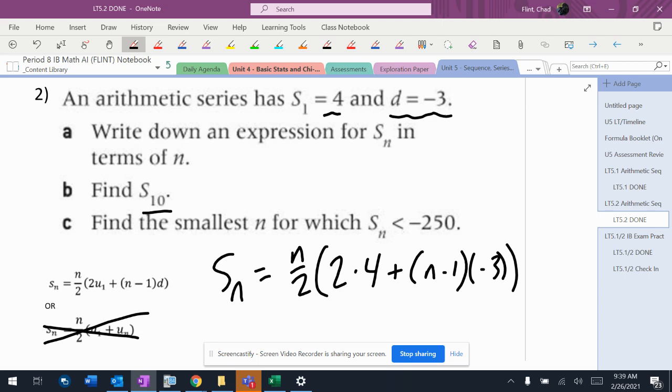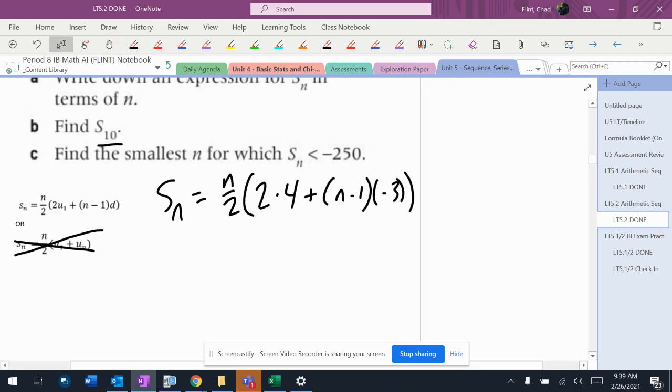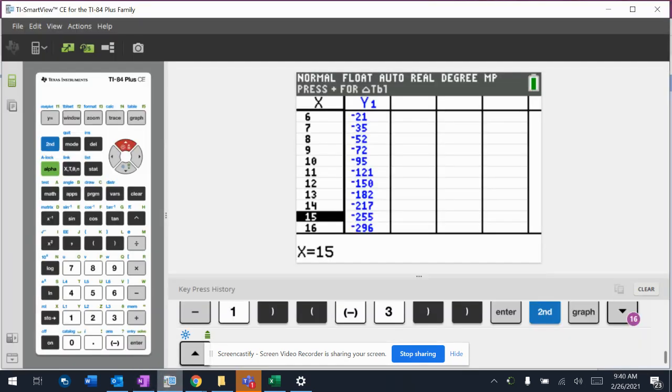So it says find S_10. All right, so find the sum of the first 10 terms. Now, can you write all 10 out and add them? Sure. It's going to take a while though. So S_10 means plug 10 in for n. So 10 over 2 times 2 times 4, I can take it to 8 if I want, I'm just going to leave it plus 10 minus 1 times negative 3. I write it really carefully here and make sure that I have all the parentheses and everything in the right spot because I'm just going to put that exact thing in the calculator.